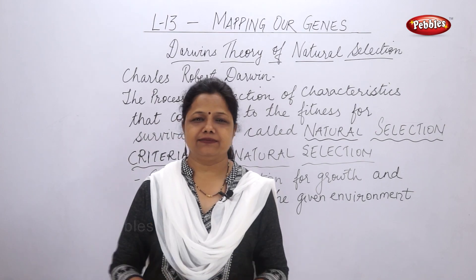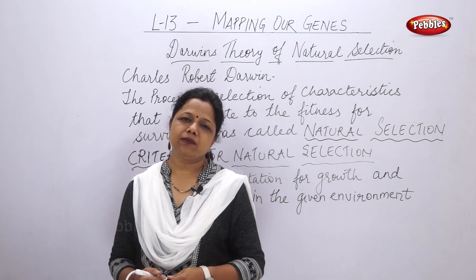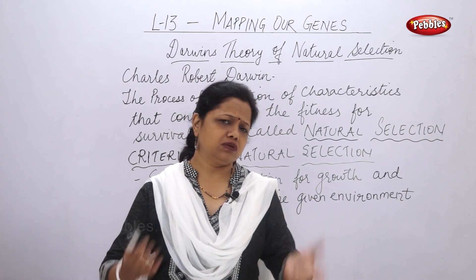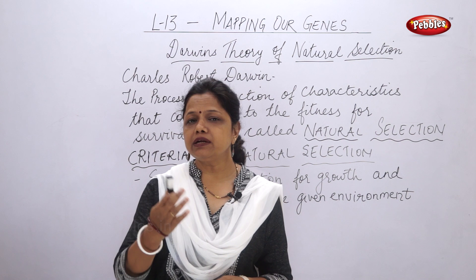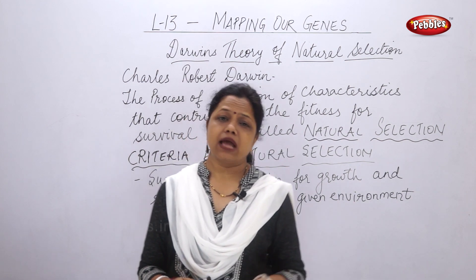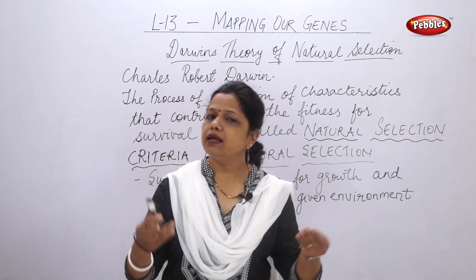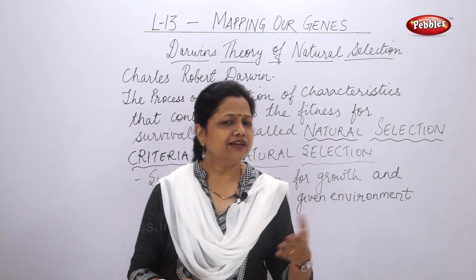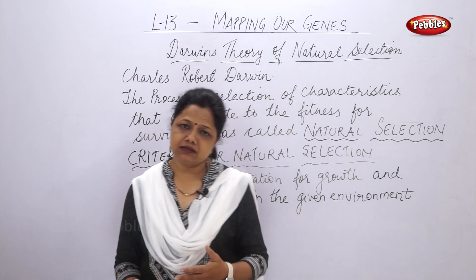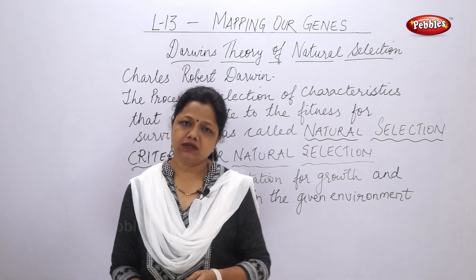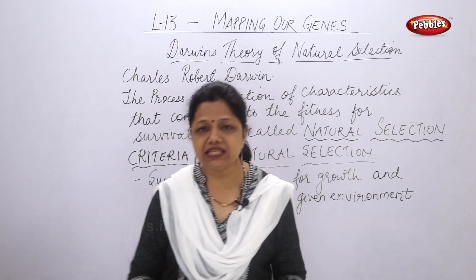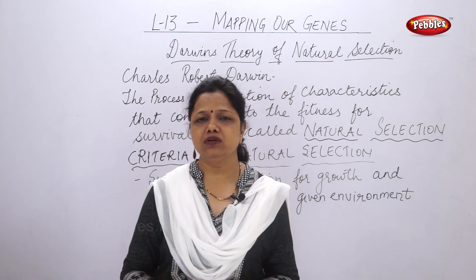Welcome back students. In the last session we were studying about the evolution of life — what evolution is and how it took place. We studied about five types of evidences: morphological evidence, paleontological evidence, anatomical evidence, vestigial evidence, and embryological evidence. These evidences tried to prove what our ancestors' body parts were, their functions, and how evolution must have taken place.